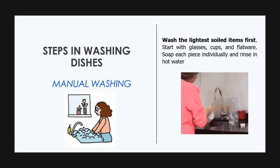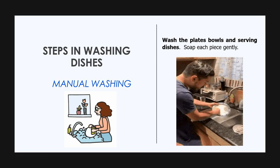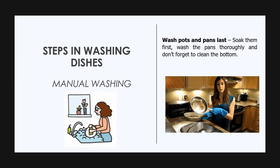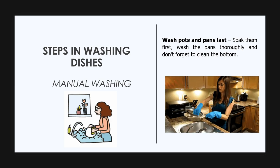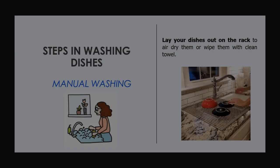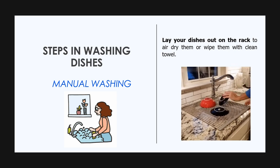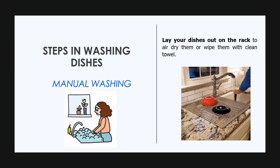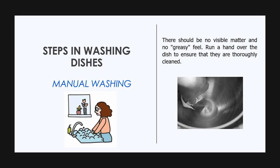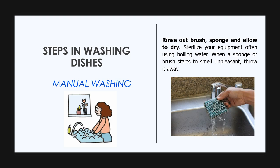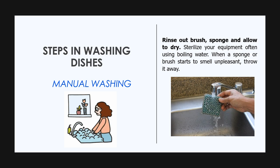Wash the lightest soiled items first. Start with glasses, cups, and flatware — soap each piece individually and rinse in hot water. Then wash the plates, bowls, and serving dishes, soaping each piece gently. Wash pots and pans last — soap them first, wash thoroughly, and don't forget to clean the bottom too. After washing, lay dishes on a rack to air dry or wipe with a clean towel. There should be no visible matter and no greasy feel — run a hand over each dish to ensure thorough cleaning. Rinse out the brush and sponge and allow to dry. Sterilize your equipment often using boiling water. When a sponge or brush starts to smell unpleasant, throw it away.